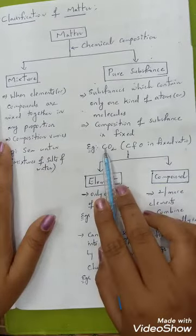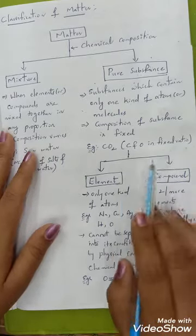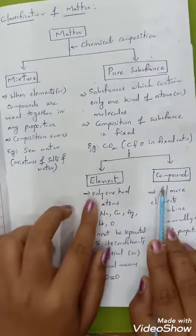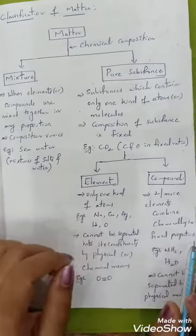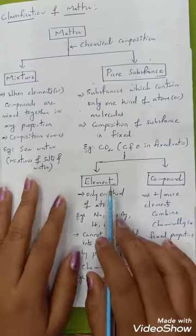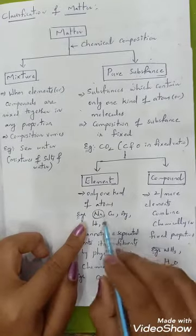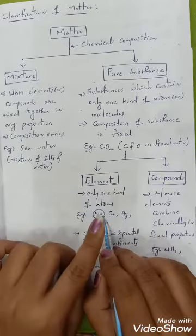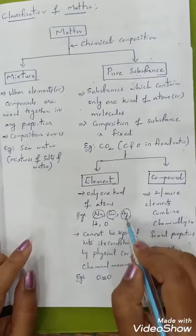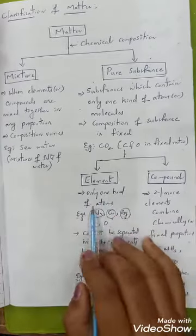Pure substances are classified into two types: elements and compounds. Elements contain only one kind of atom. Examples include sodium (Na), copper, silver, hydrogen, and oxygen — all contain only one kind of atom.